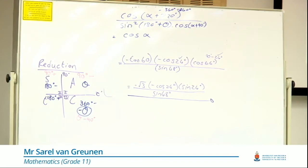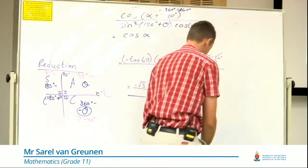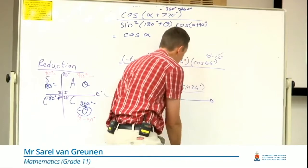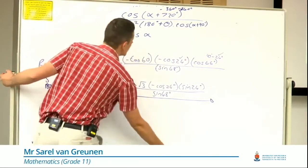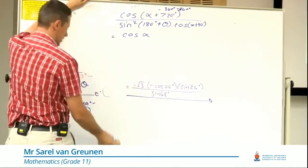Not negatives or positives or anything, it's just cos of alpha because the 720 just fell away. Now let's have a look at the bottom. The bottom is where life becomes quite interesting.